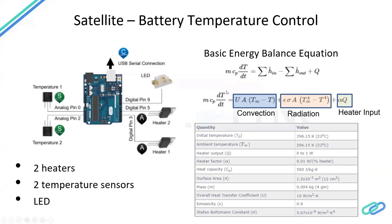The settings are as follows: initial ambient temperature is 23°C, and the heater output capacity ranges from zero to one watt — which you can control using a parameter alpha (0–100%). At 1%, it delivers 1% of one watt; at 100%, it delivers the full one watt. Heat capacity is also specified for the material being heated: for example, 500 joules is needed to raise the temperature of a unit mass by 1°C — this is the specific heat capacity of the system.